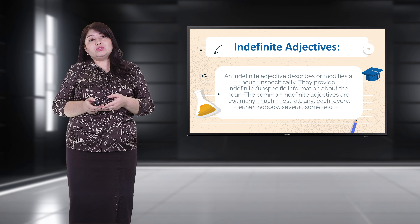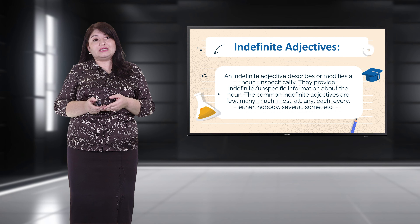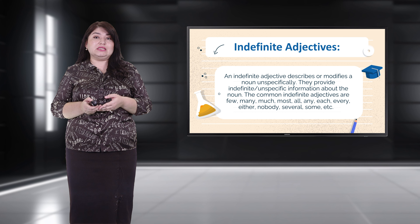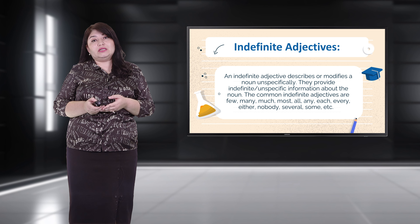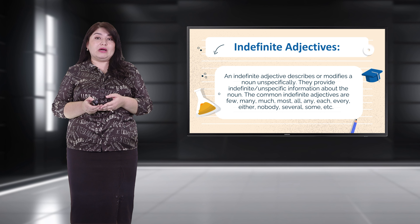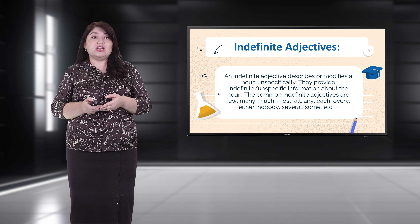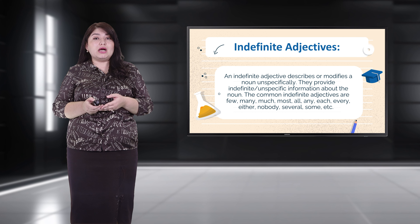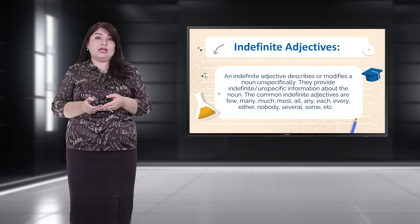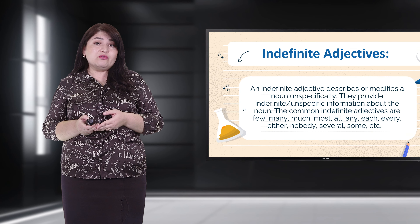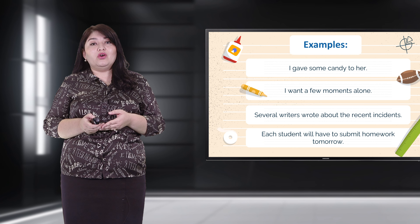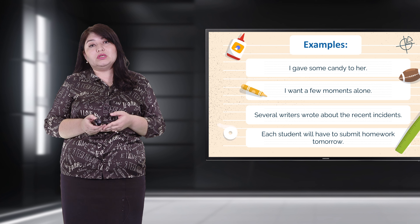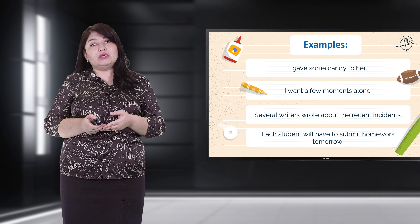Indefinite adjectives describe or modify a noun unspecifically. They provide indefinite, unspecific information about the noun. The common indefinite adjectives are: few, many, much, most, all, any, and others. For example: 'I gave some candy to her,' 'I want a few moments alone,' or 'Several writers wrote about the recent incidents.'